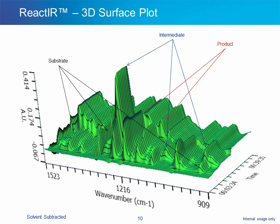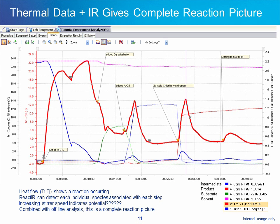We can now monitor the changes in concentration for these components. We can bring these infrared trends into iControl software and view them along with the EasyMax trends to get a complete and thorough understanding of the reaction dynamics. While TR minus TJ indicates the exotherm of the reaction, the specificity of the mid-infrared spectrum shows us the species that were formed with each step. The CONCERT algorithm was used to automatically deconvolve the data to provide concentration profiles. CONCERT also provides mathematically calculated pure component spectra, which can be used to confirm the structure of the intermediate species and understand reaction mechanism and pathway. The profiles can also be used to calculate the kinetics.